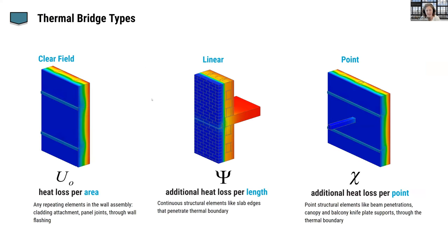There are three types of thermal bridges: the clear field, which is like an area of cladding with a regular pattern of attachments; linear thermal bridges, which are elements like parapets and slab edges; and point connections like canopy or beam penetrations. Identifying all of those throughout the project is essential.